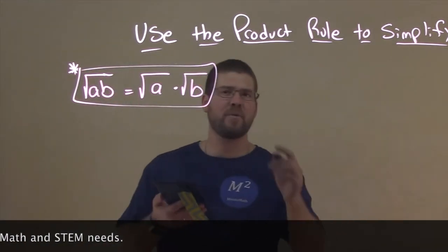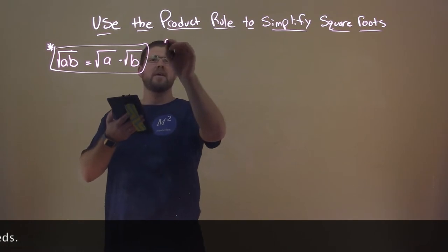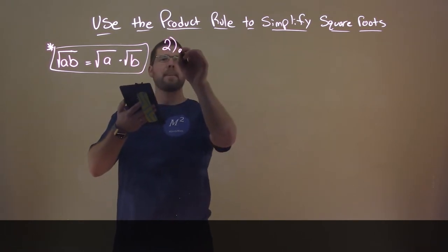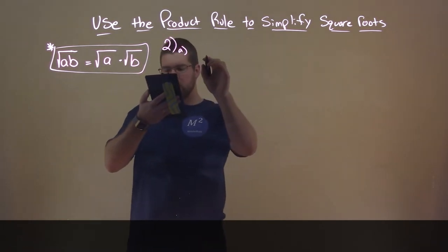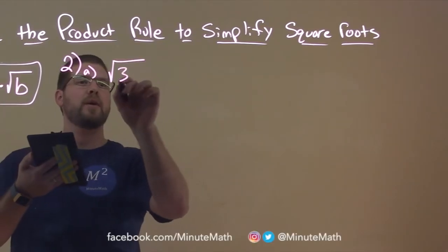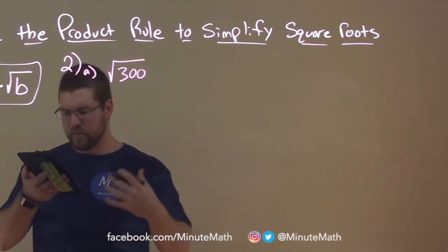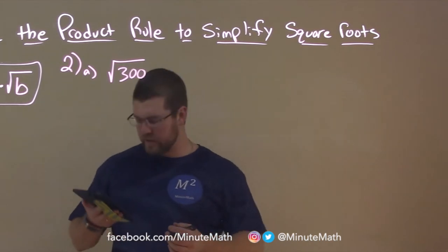So let's just dive right in. Let's go for our first one here. Let's call it example two. What about the square root of 300? How can we use this product rule to simplify these square roots?